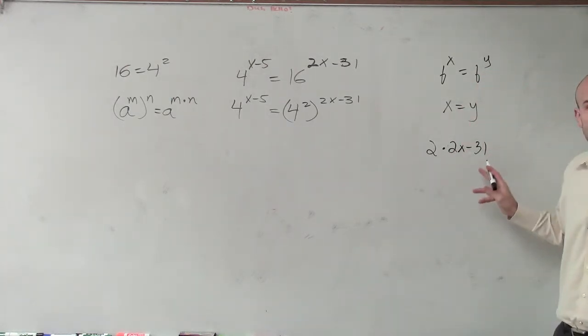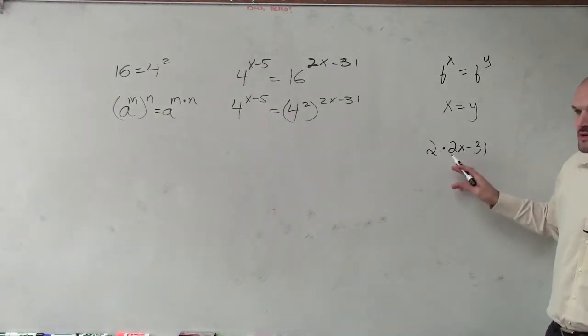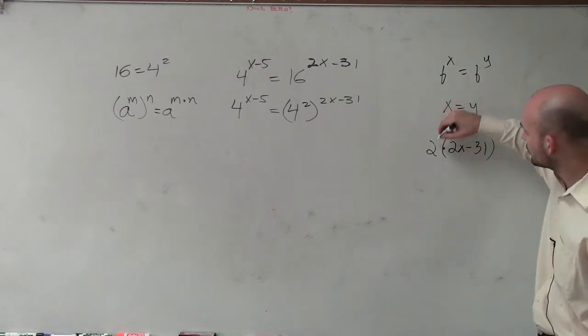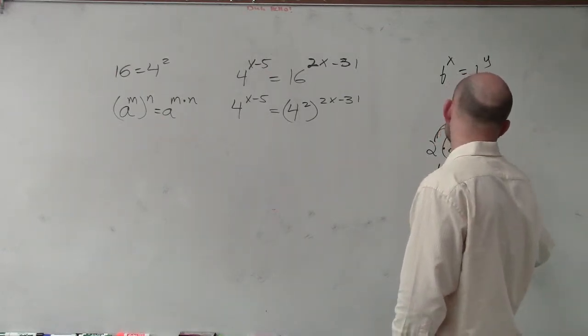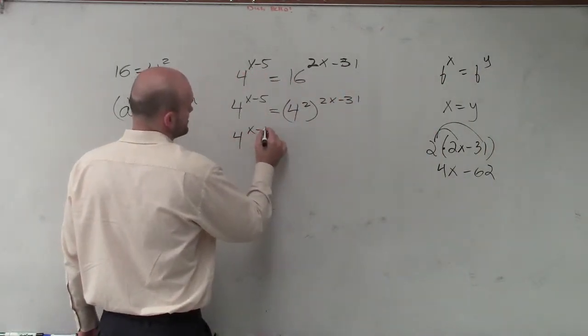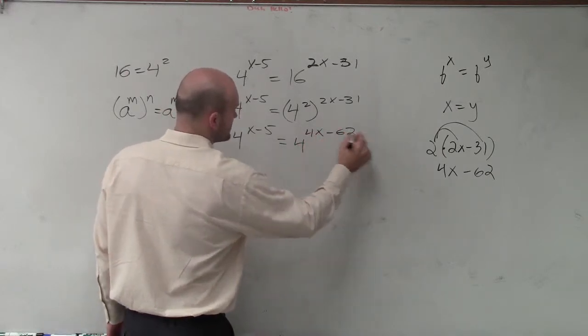But notice, ladies and gentlemen, this is a binomial, right? So 2 times 2x minus 31 is not just 2 times 2x. You have to make sure that you put that in parentheses. So you're multiplying the 2 times both terms. Therefore, you get 4x minus 62. So I have 4x minus 5 equals 4 to the 4x minus 62.